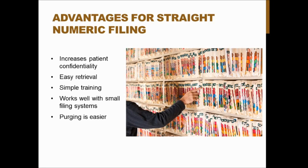Unit numbering mainly works well with small filing systems — numbers beyond six digits can become difficult to manage. It also makes purging easy; if a patient was one of the doctor's first and hasn't been seen in a long time, you can purge several sections of records at once.